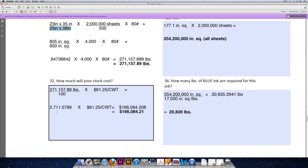Or when rounded, $166,084.21. If you were able to get all of these questions correct, please move on to the next video to calculate the ink coverage, pounds, and costs for problem number two.